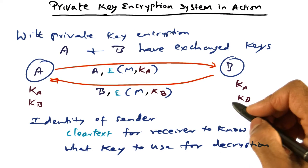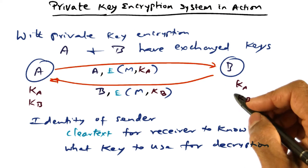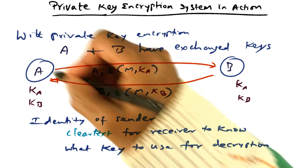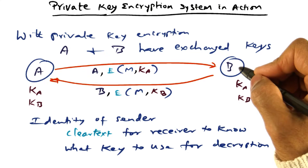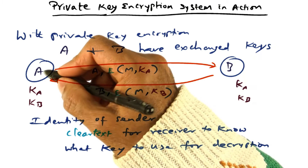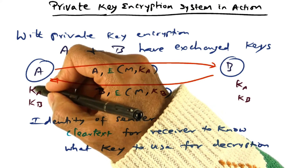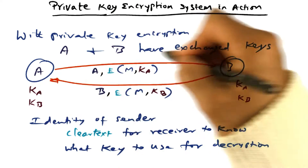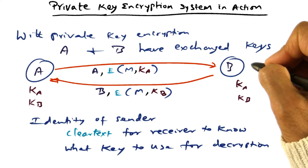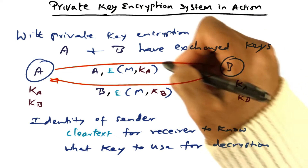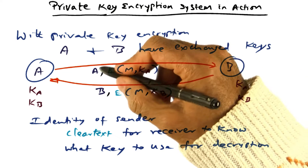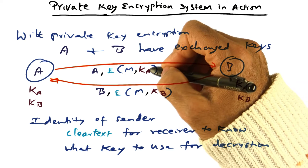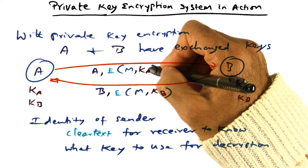Here is a private key cryptosystem in action. Two entities, A and B, have exchanged keys. A will use the key KA to send a message to B, and B can decrypt the message using the same key KA.